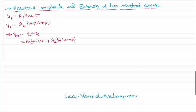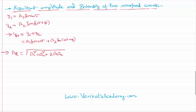We will talk about how the resultant of these two waves will appear at a later stage. But as these two waves are combined together, the resultant amplitude of these two waves will be: A resultant equals root of a1 squared plus a2 squared plus 2·a1·a2·cos(phi) — just like a vector addition.